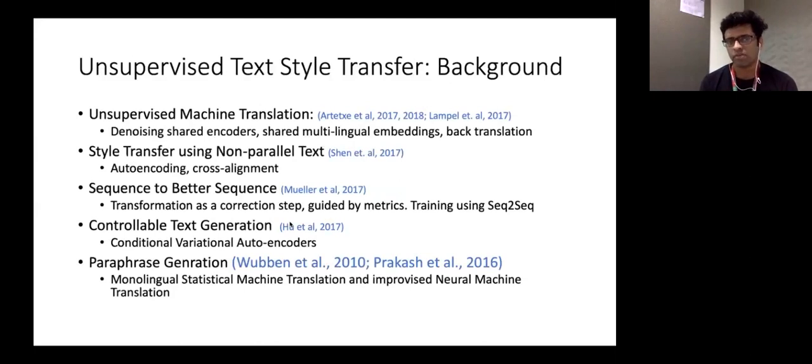And the key use case that we tackled here is unsupervised text formalization. In style transfer, very recently, because of this huge explosion of deep learning and reinforcement learning, a lot of systems have been proposed. Key systems include unsupervised machine translation systems, style transfer using non-parallel text. That's a classic, that was a classic NeurIPS paper published a couple of years ago. Then we have this sequence to better sequence idea where you are really transforming a sequence into another sequence by virtue of some external signals which come from NLP systems. This is one of the closest systems that we have as baselines in our experiment. Then there is a work on controllable text generation and paraphrase generation. But all of them are quite recent and they are to some extent based on neural paradigms.